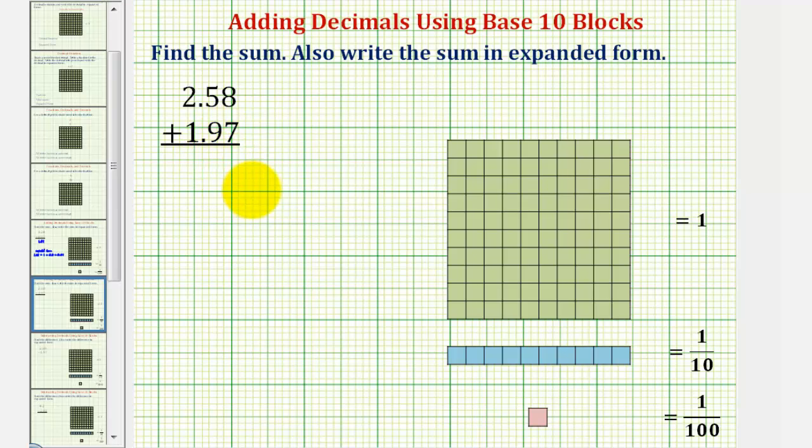Because we're working with decimals, we'll define a flat as one whole, a long as one-tenth, and a bit as one-hundredth.